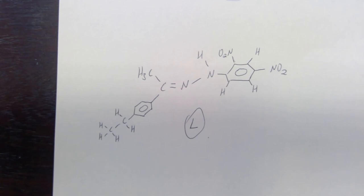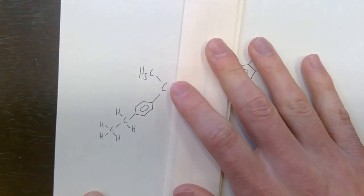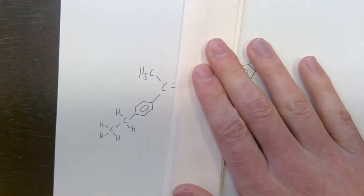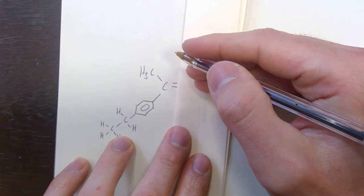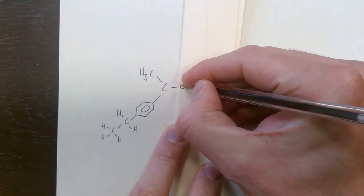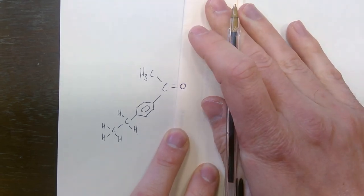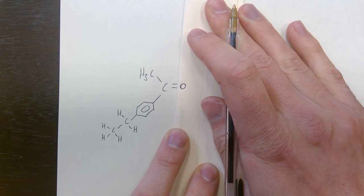The final part of the question asks for the structure of the original ketone. All we need to do is cover up the DNP side of the molecule, look at that double bond, and replace it with an oxygen. That is the structure of the original carbonyl compound — a ketone with a methyl group on one side and the ethyl-substituted benzene ring on the other.